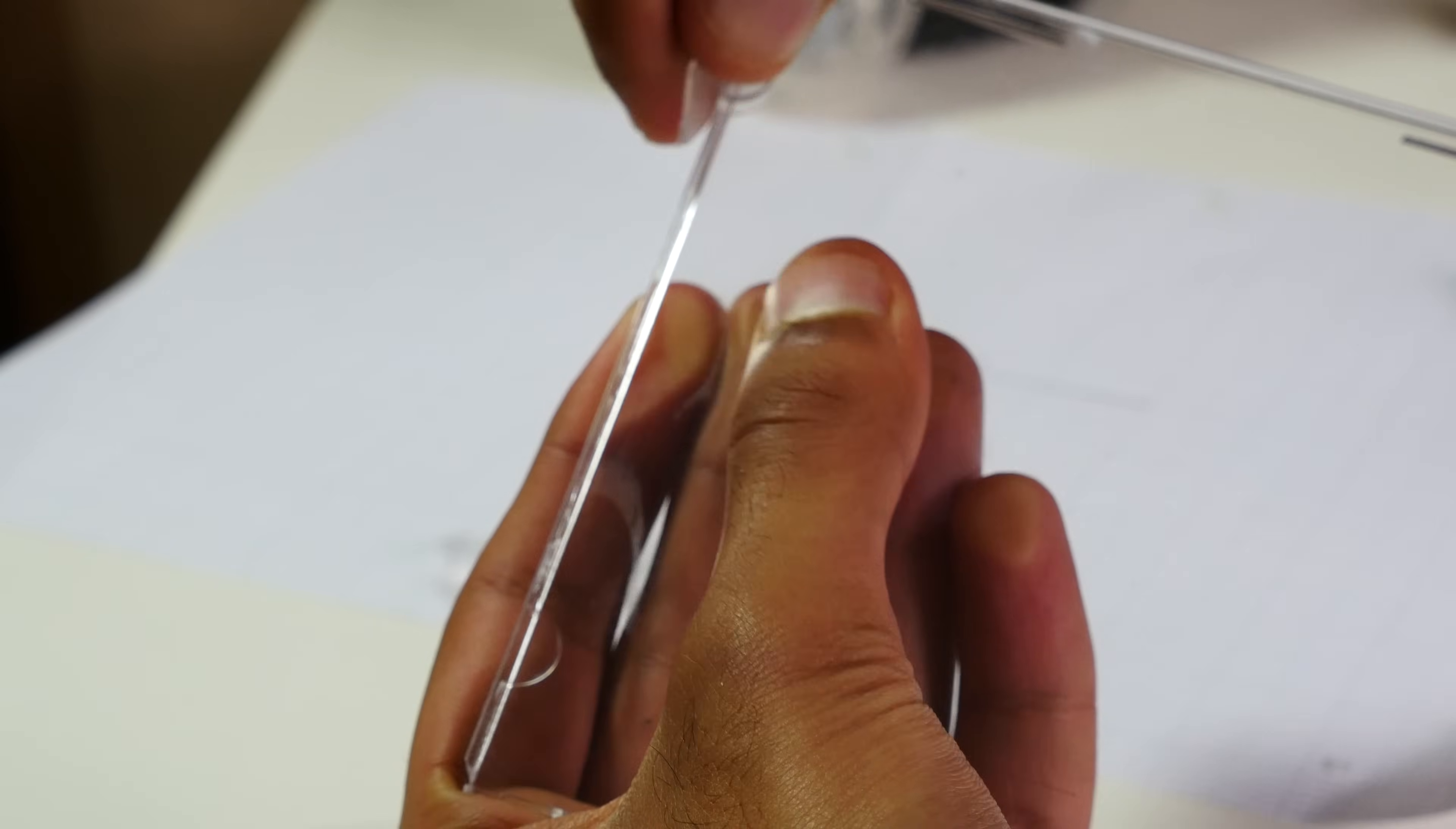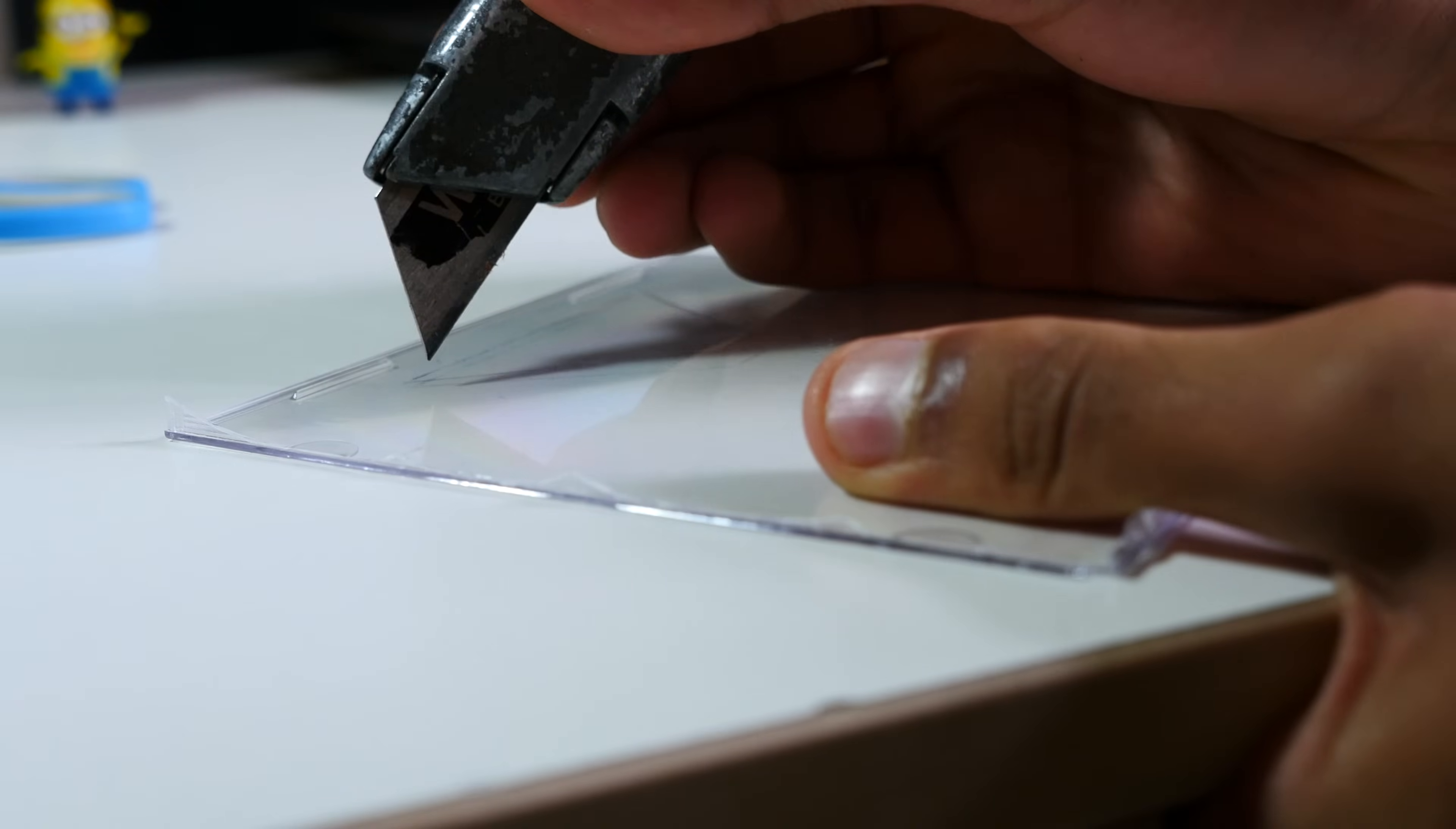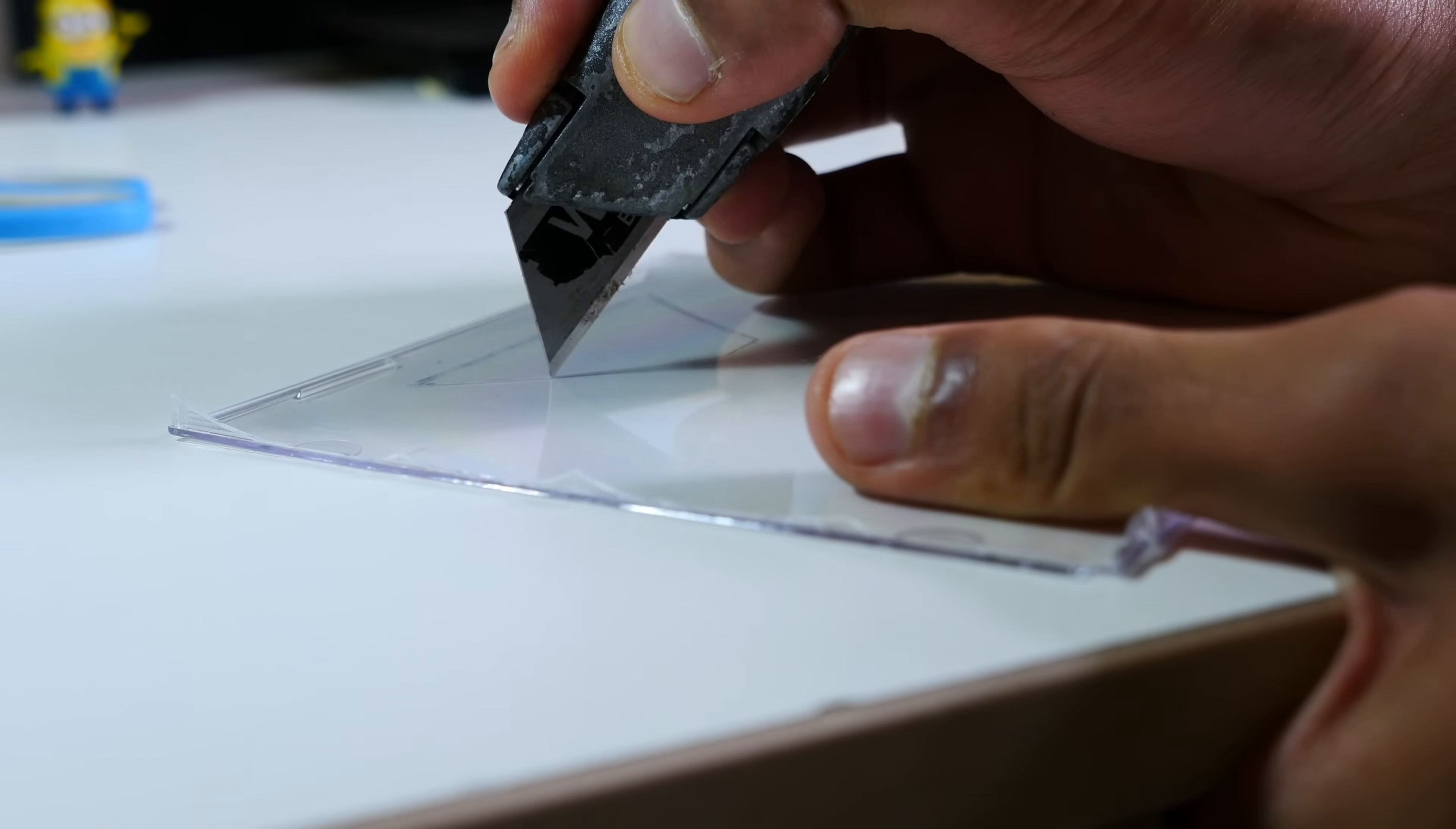So ideally, this is going to be plastic. If you just happen to have a glass one, it can work, but just be extra careful. The higher the transparency, the better the image will come through, but it doesn't matter if it's sort of old and dusty, as long as you just give it a clean and make sure there aren't too many scratches.